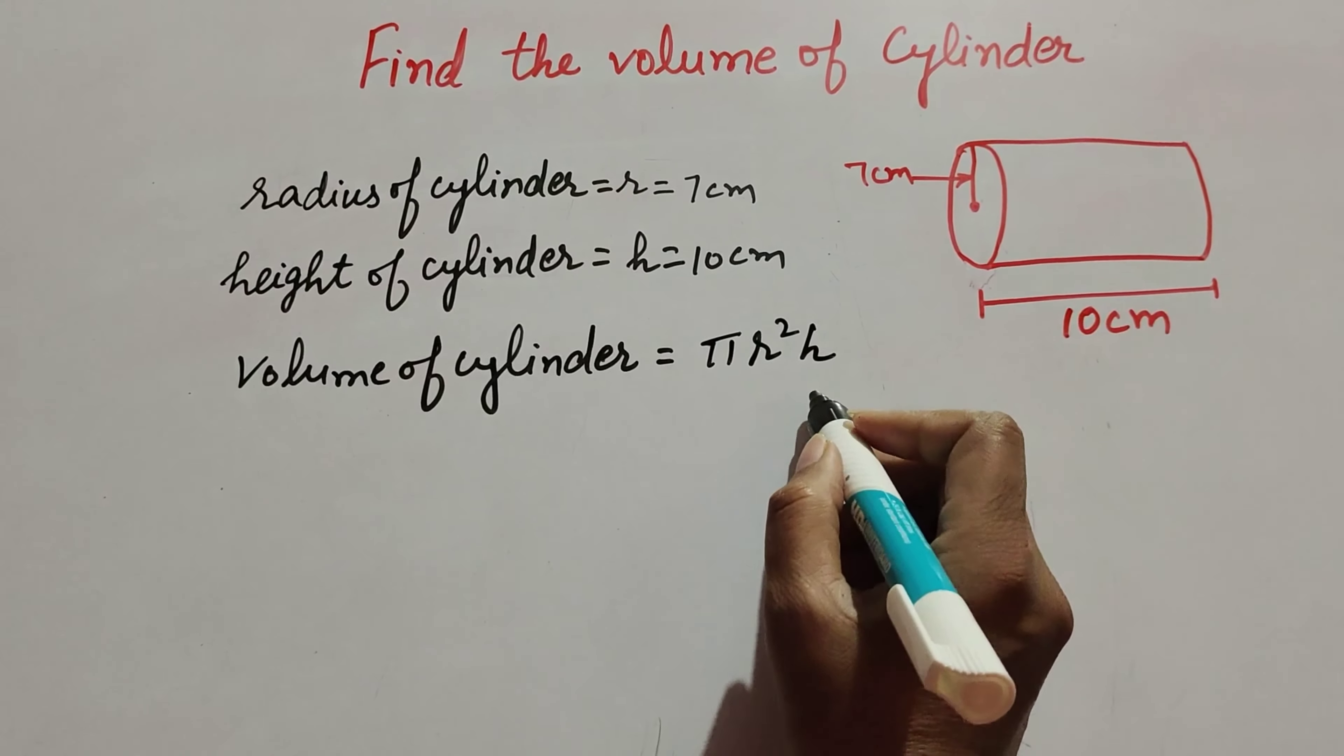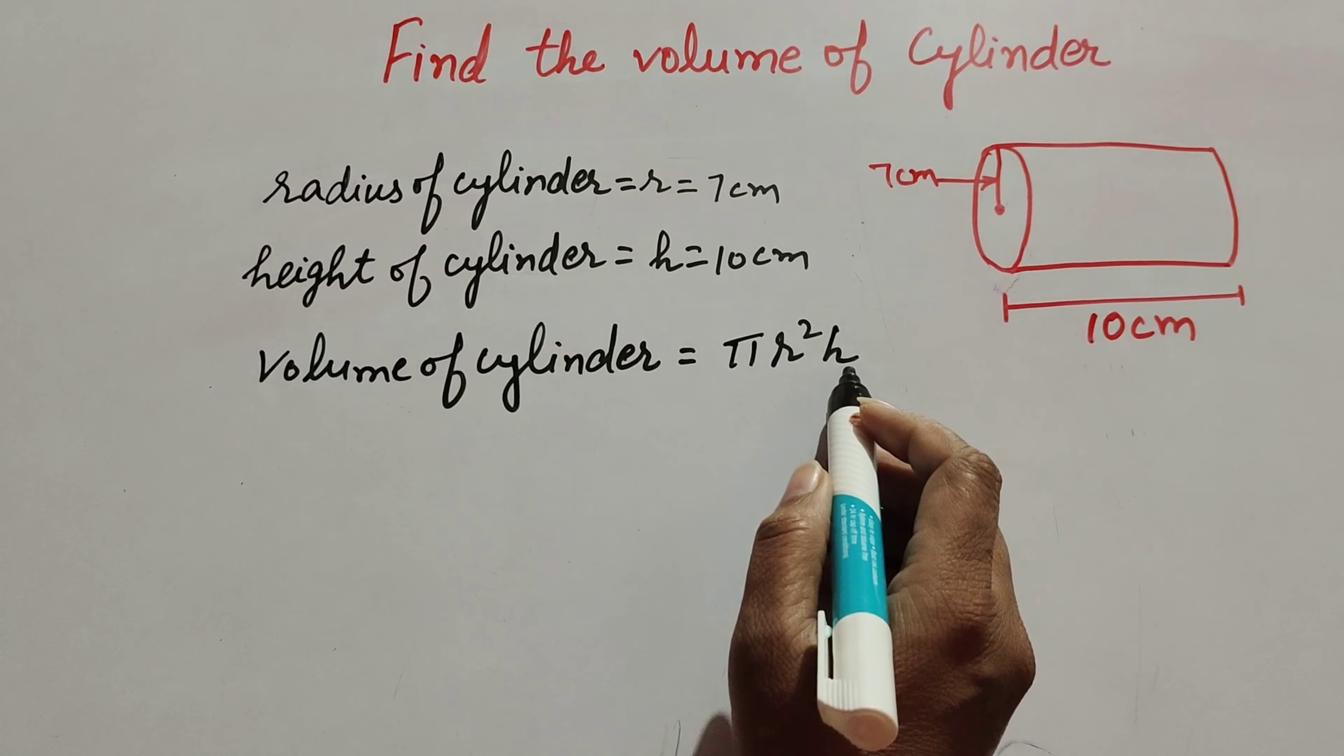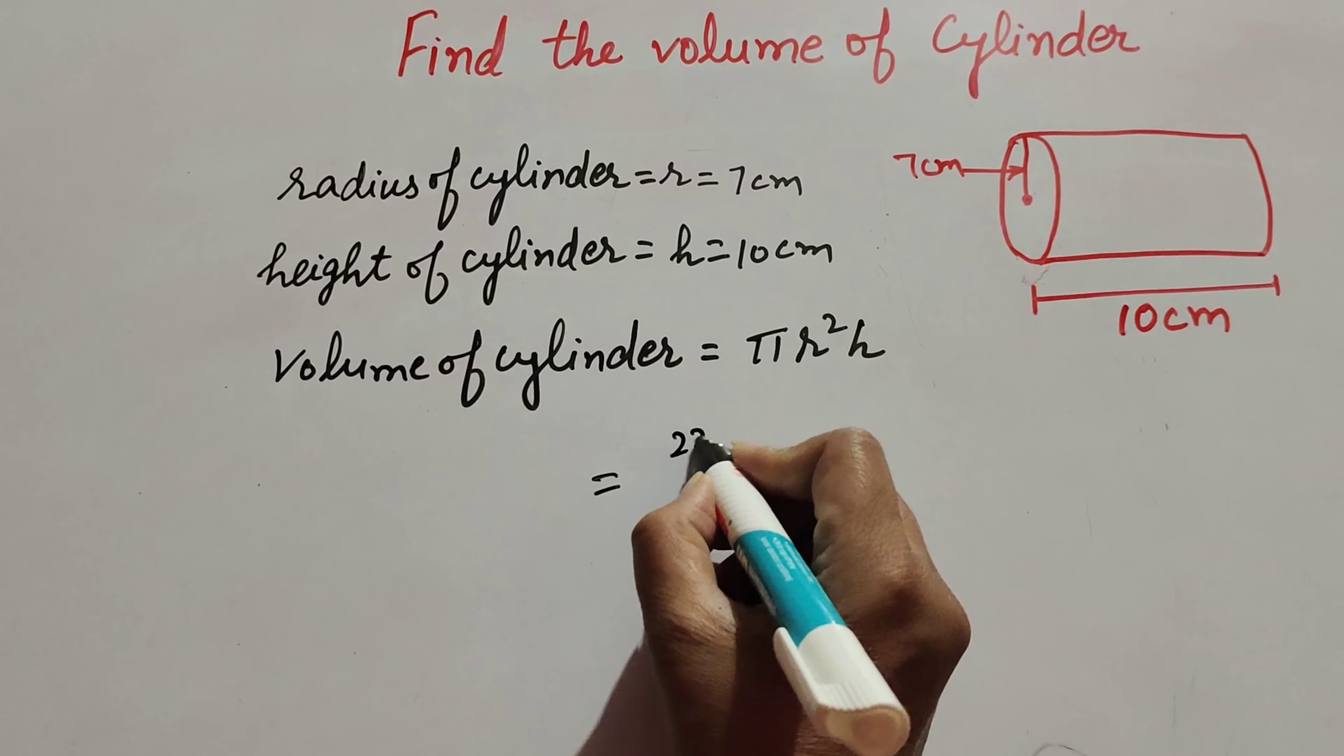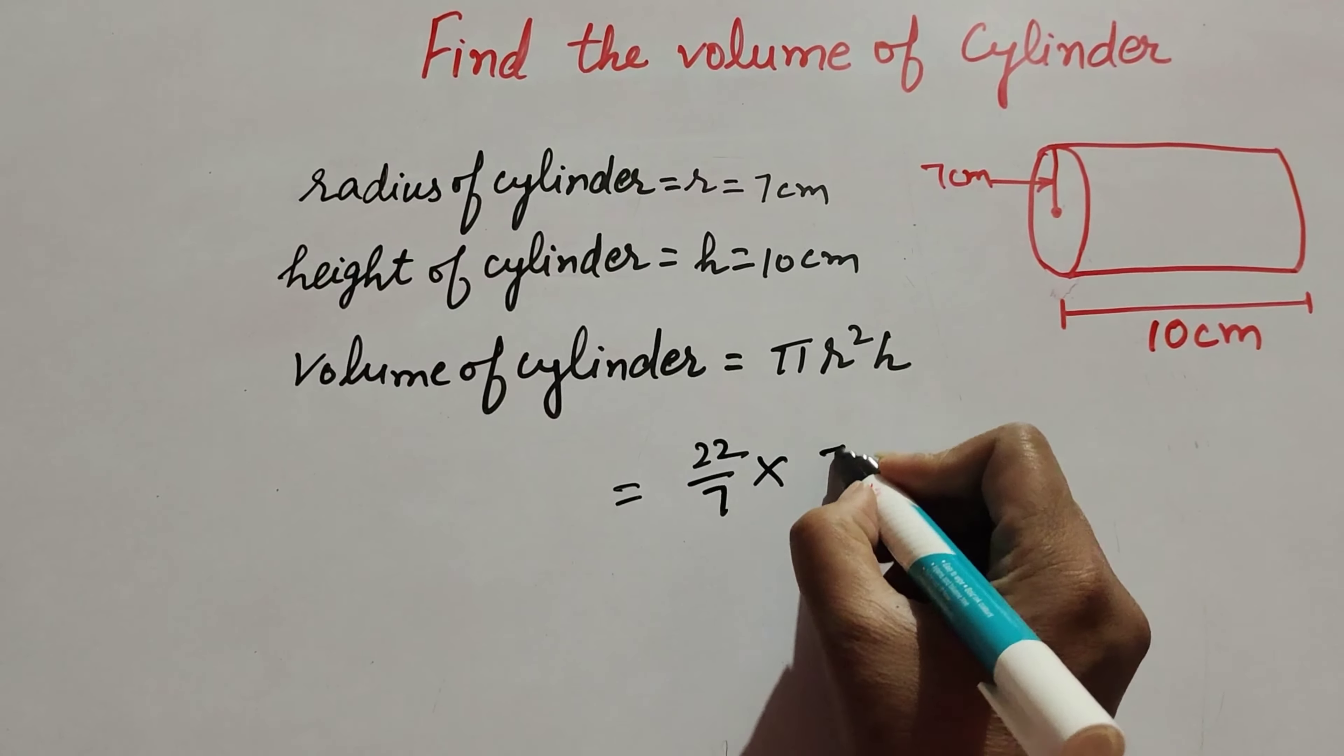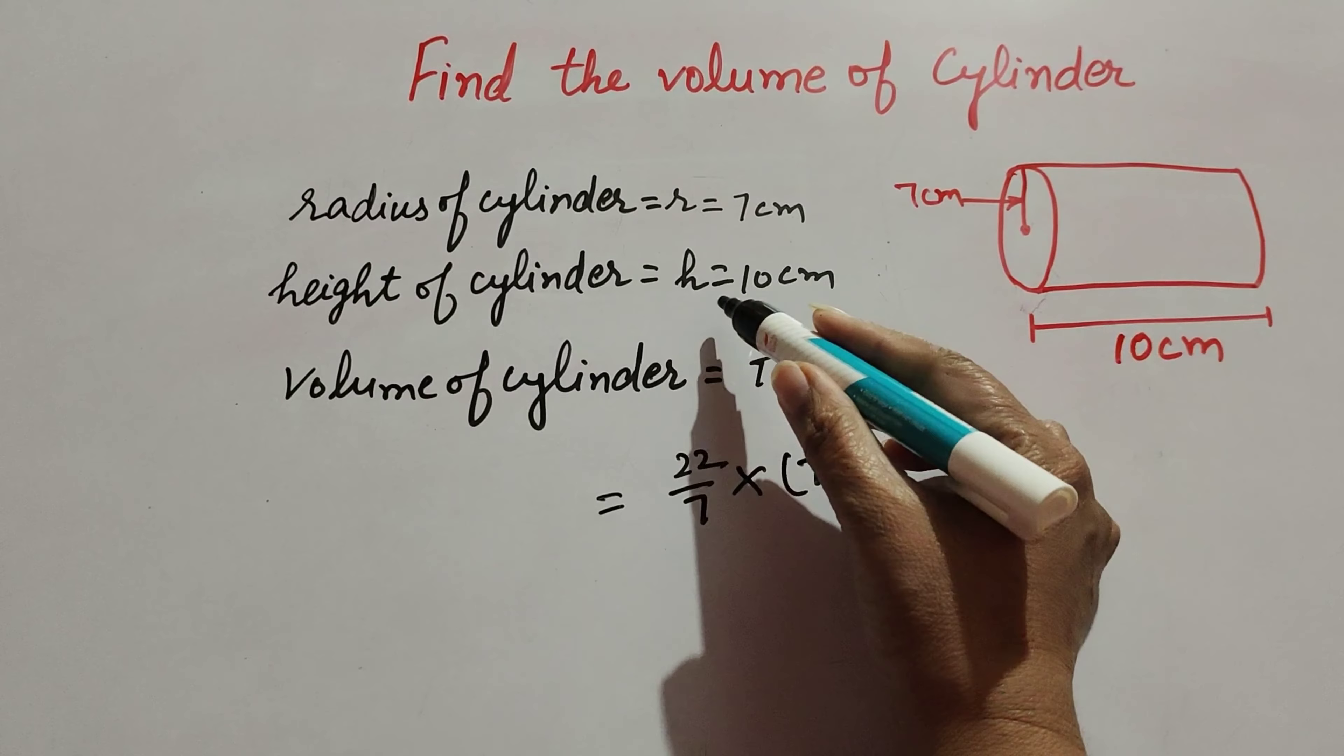To find the volume of the cylinder: πr²h. In this, π, its value is the constant 22/7. Multiply by r². R is the radius, and the radius equals 7 centimeters. It is 7², multiplied by the height. Height is 10 centimeters. So, 22/7 × (7)² × 10. We write 7² as 7 × 7.